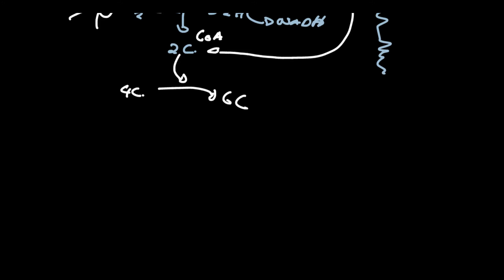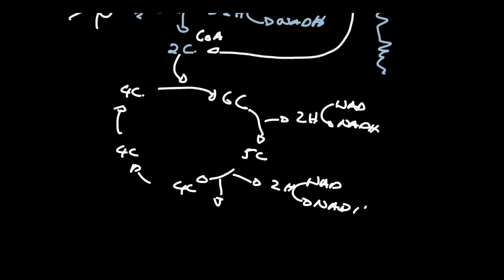Remember the citrate gets decarboxylated with the production of NAD and also of FAD, so these are going to NADH, and we produce an ATP through substrate level phosphorylation, and we produce an FAD, and we produce carbon dioxide through decarboxylation.